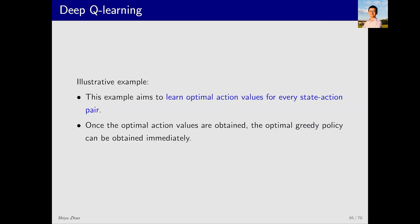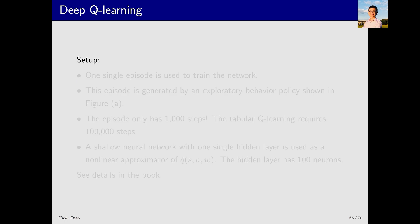Next, we apply deep Q-learning in a few examples. Through the examples you will have a better understanding. The task here is to learn optimal action values for every state-action pair. Note that this isn't just about finding a good path to the target state from a starting state—it's about estimating the action values for all state-action pairs. Once the optimal action values are estimated, the optimal greedy policy can be immediately determined. Let's look at the setup for this problem. First, in this simulation we use just one single episode to train the deep Q-learning model.